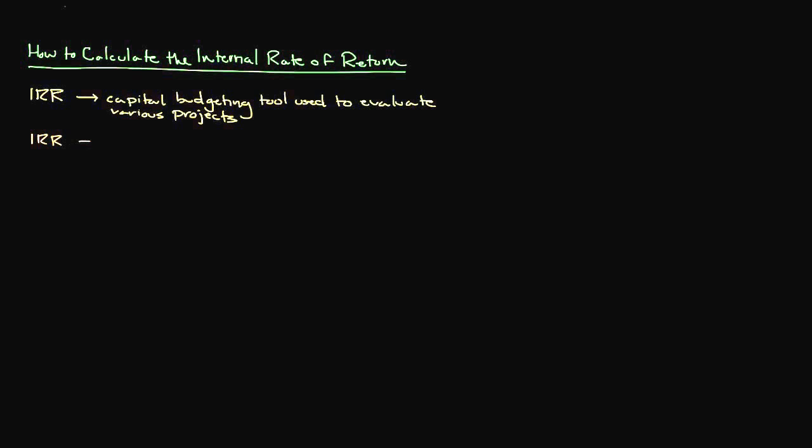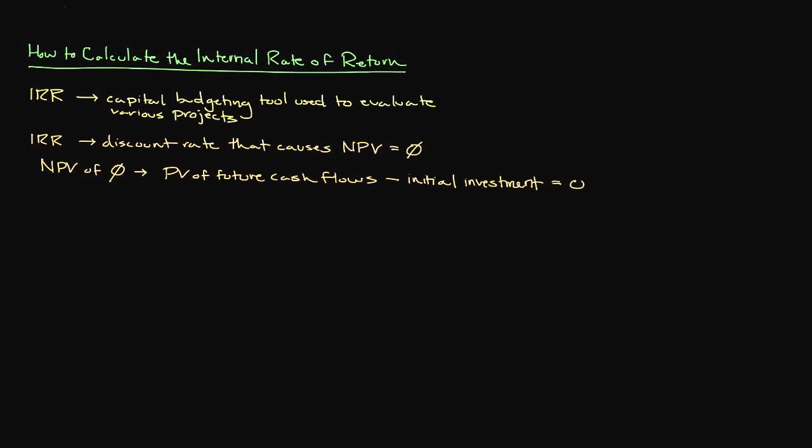IRR is the discount rate that causes the net present value or NPV to equal zero. An NPV of zero essentially means that the present value of all future cash flows equals the value of our investment. Put another way, the money that we expect to receive in the future, discounted into today's dollars, equals how much we are investing in this project.